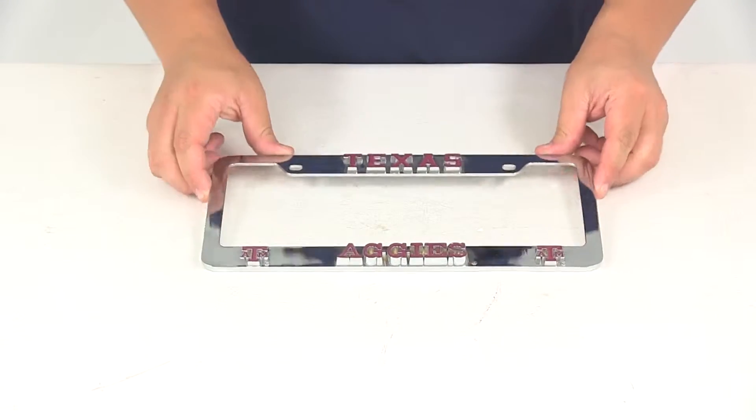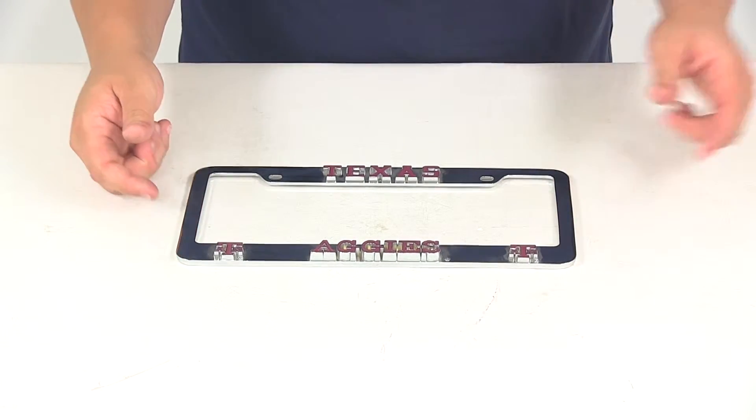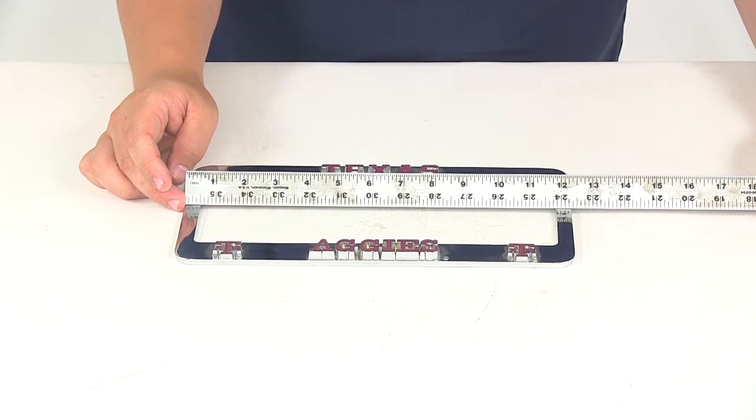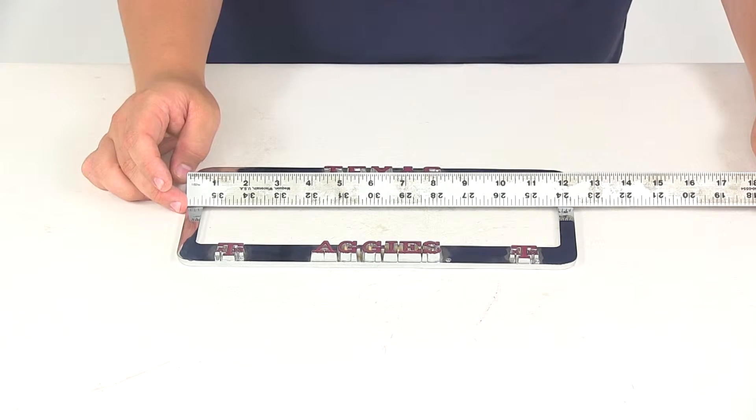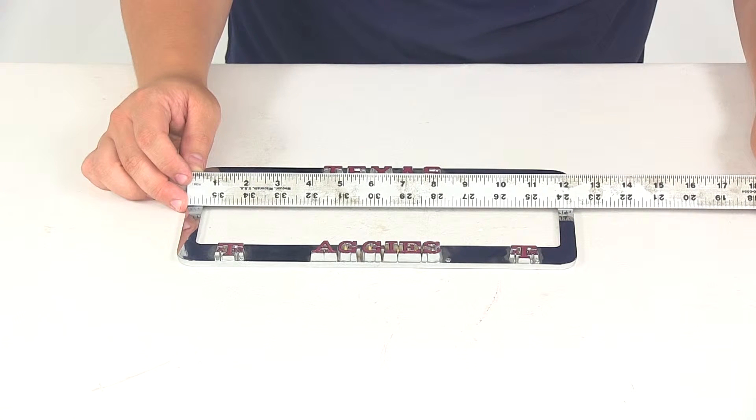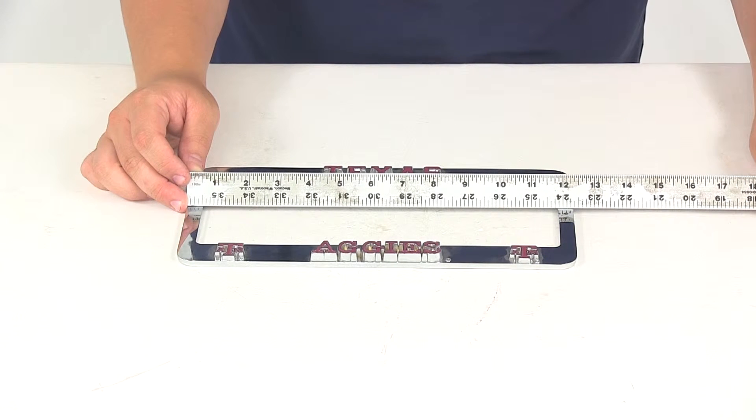We're going to take a look at the overall dimensions starting with the overall length outside edge to outside edge. That gives us a measurement of about 12 and 5/16ths of an inch.